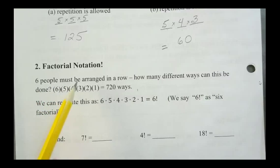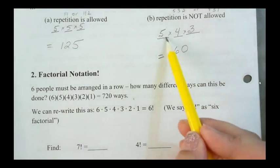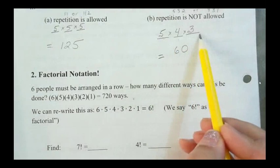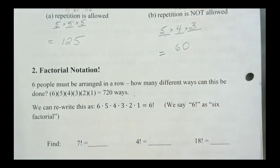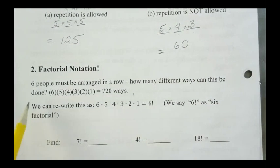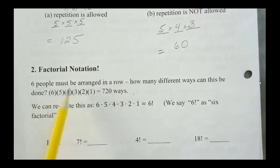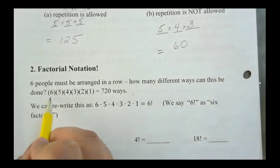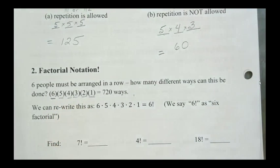Six people must be arranged in a row. How many different ways can this be done? Now, do you notice where we had this? You've got five times four times three. This is where factorial notation comes in handy. If I have six people that must be arranged in a row, these are the different spots, right? One, two, three, four, five, six different spots.